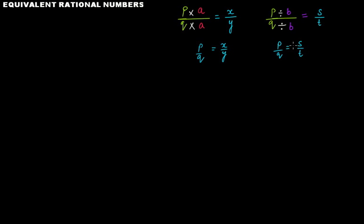One important thing: whenever you multiply the numerator and the denominator with a number, that number should not be equal to zero. Because if a is zero, then q times a becomes zero, and you get zero at the place of the denominator. In a rational number you cannot have zero in the denominator, so a cannot be equal to zero — you can multiply with any number other than zero.